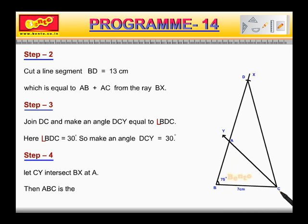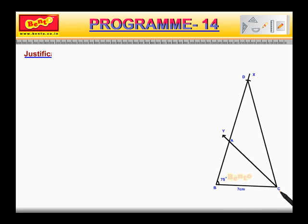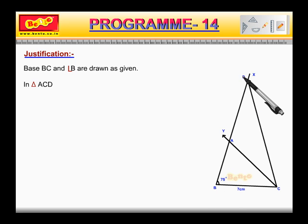Justification: Base BC and angle B are drawn as given. In triangle ACD, angle ACD is equal to angle ADC, which is equal to 30 degrees by construction.